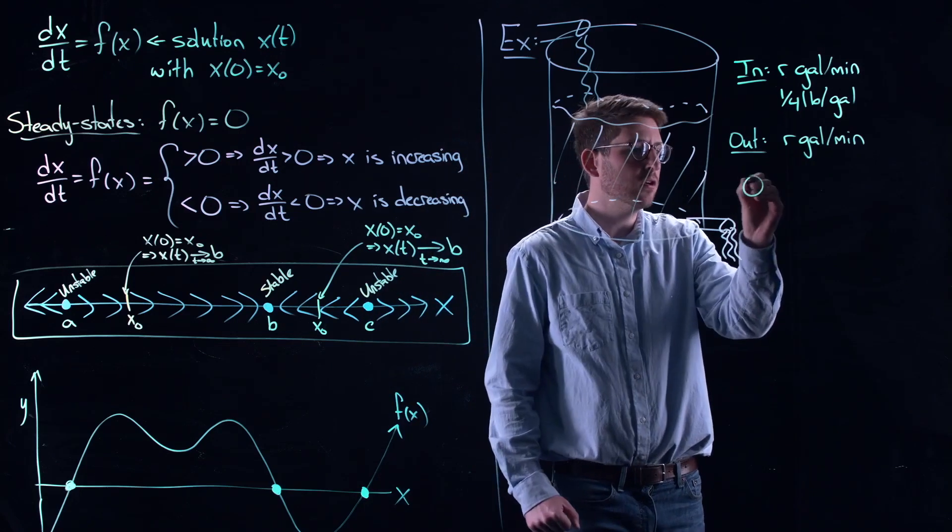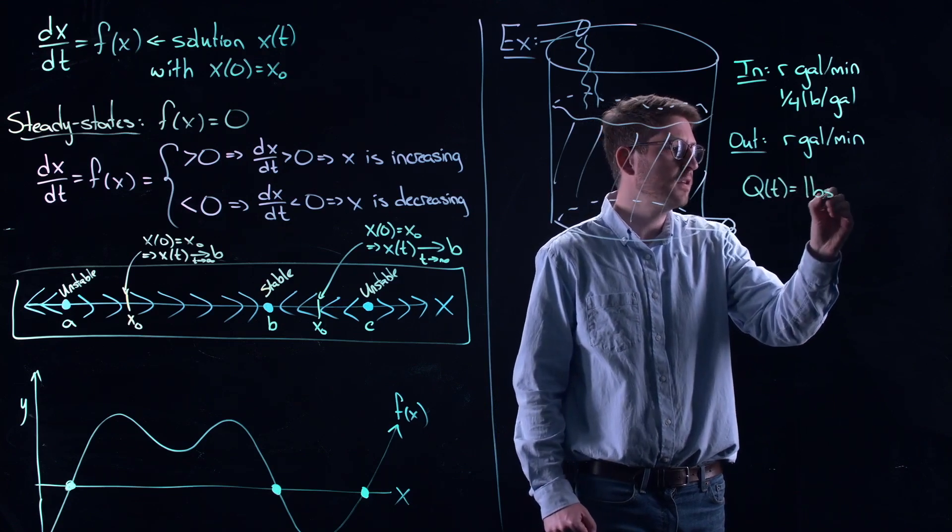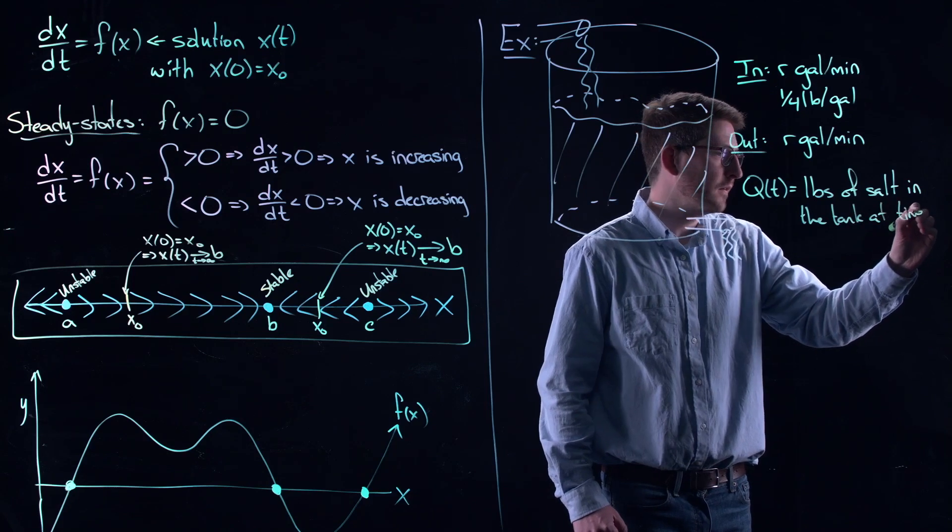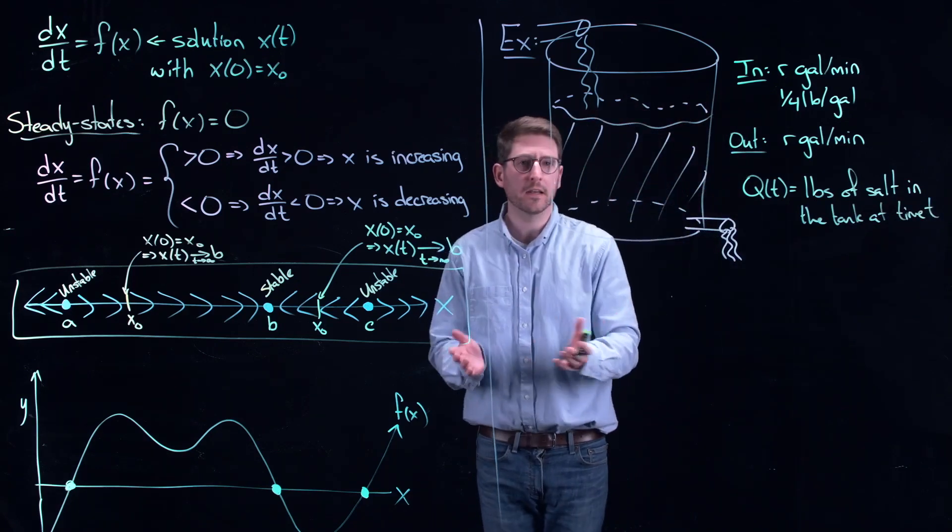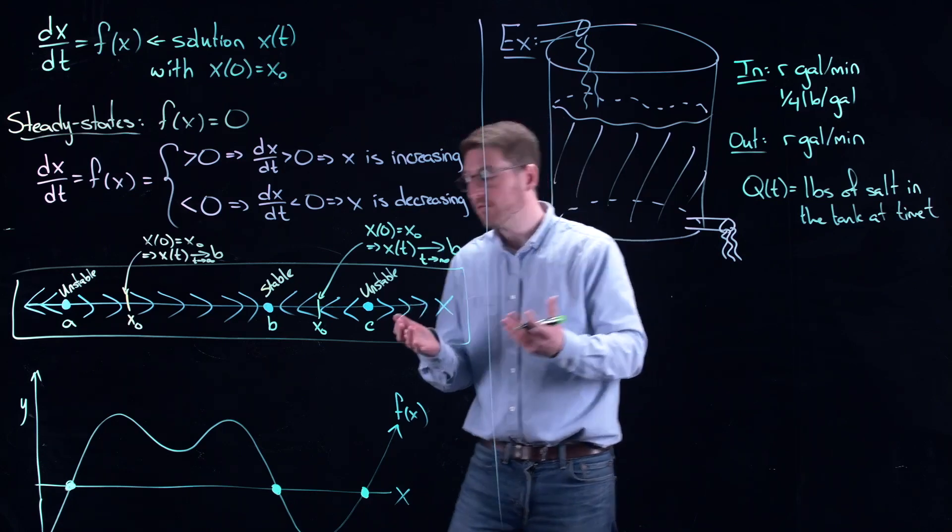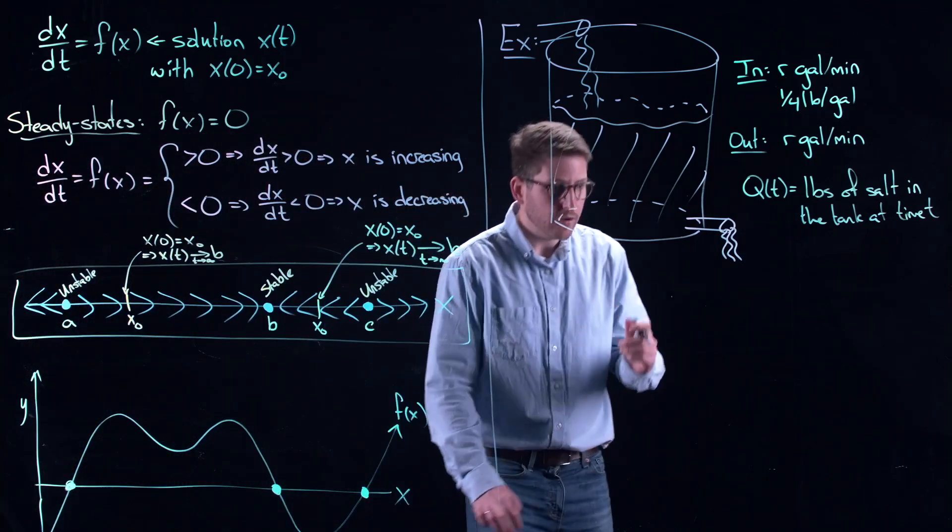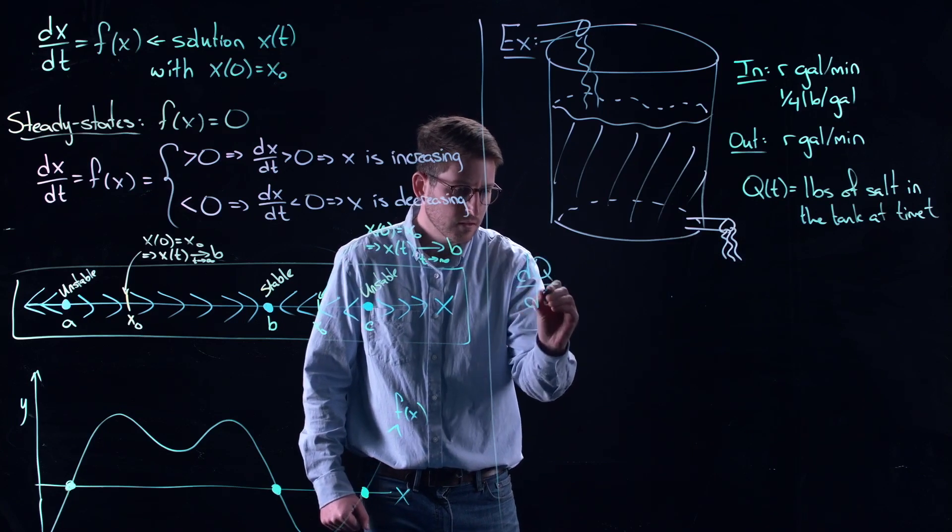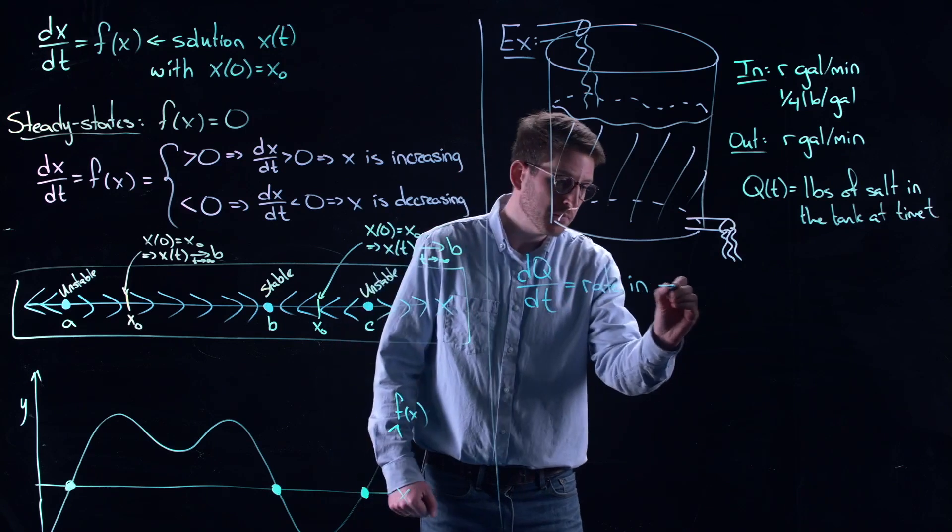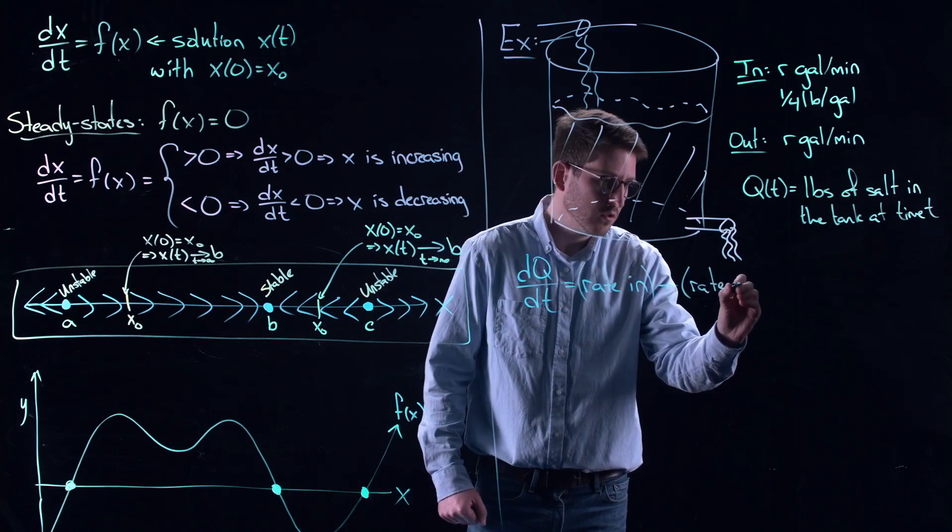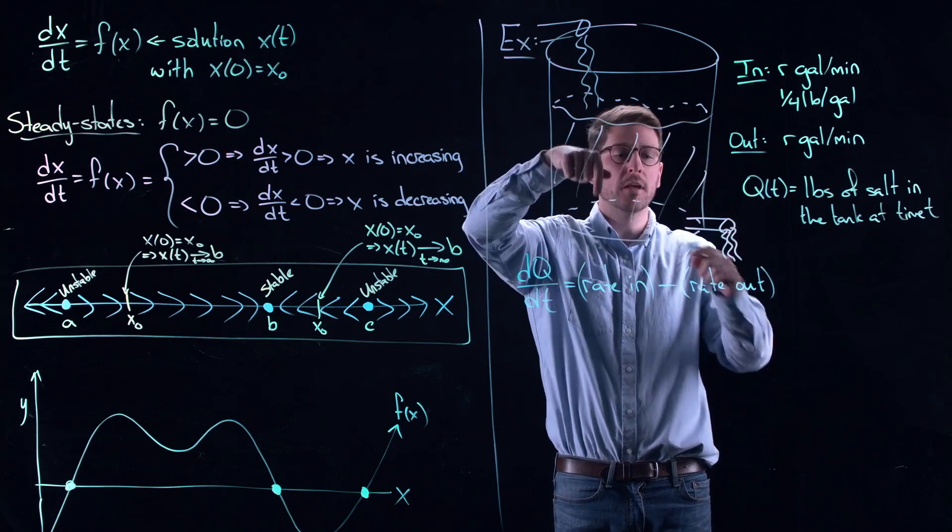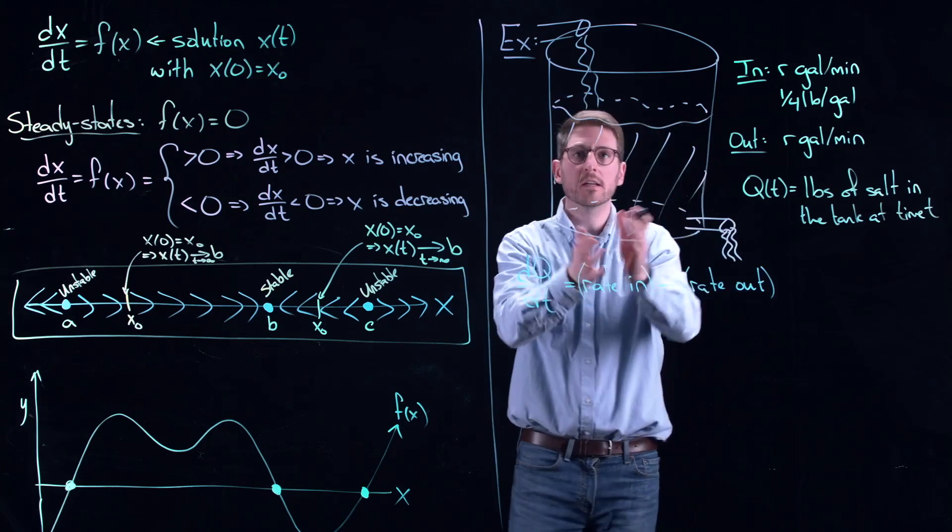Now I'm going to say let Q of T equal to the pounds of salt in the tank at time T. So if I come look at it after an hour, that would be Q of, say, 1, if I was measuring T in hours. Or if I came looking at it in 5 hours, that would be Q of 5. So I can model this differential equation as the rate at which the amount of salt is changing is just the rate at which the salt is coming in minus the rate at which the salt is going out. So this is the change in the amount of salt. The only things that are happening in my system is salt water's coming in, salt water's draining out.